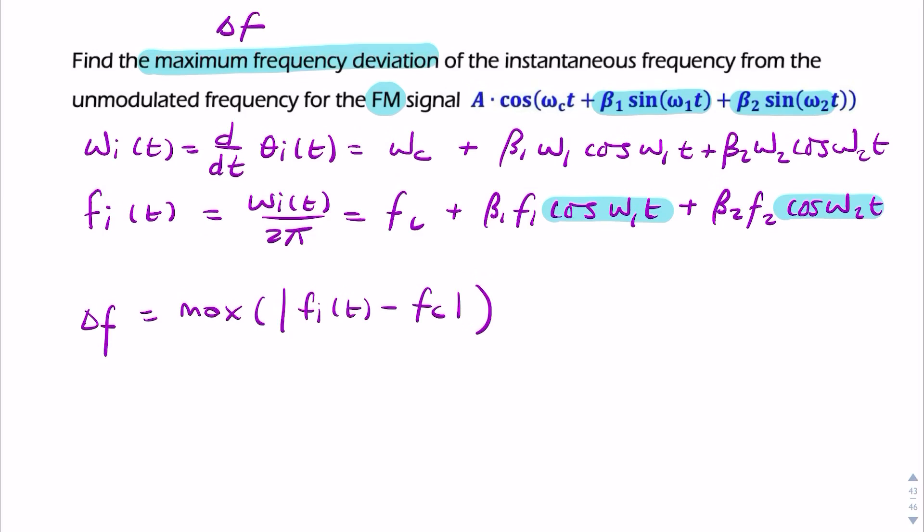And we're looking for the maximum value and the maximum happens, the maximum value of the instantaneous frequency happens when this is equal to 1. Because, remember, these are all adding together. So, when will this be maximum? It will be maximum when all the cosines are equal to 1.